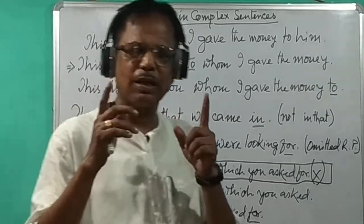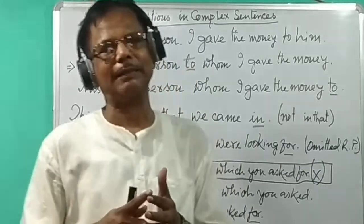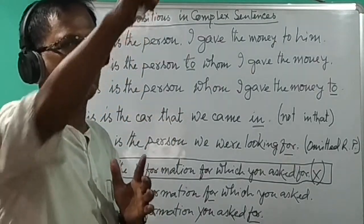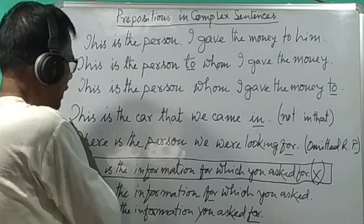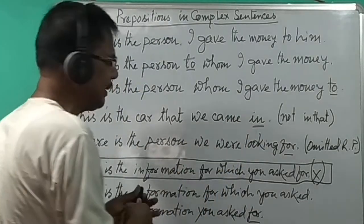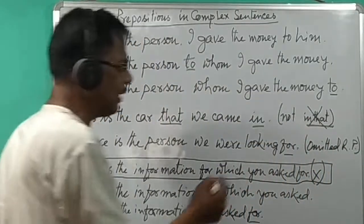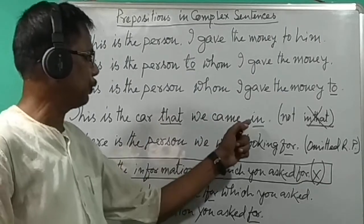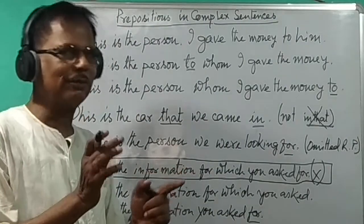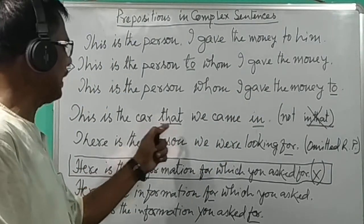Again, if the connective is 'that' — if we use 'that' to connect the sentence — the preposition goes to the end. For example: 'This is the car that we came in.' Since 'that' is there, we cannot place the preposition before it, so the preposition goes to the end of the sentence.